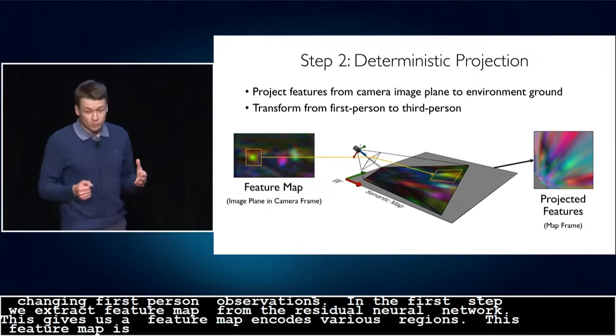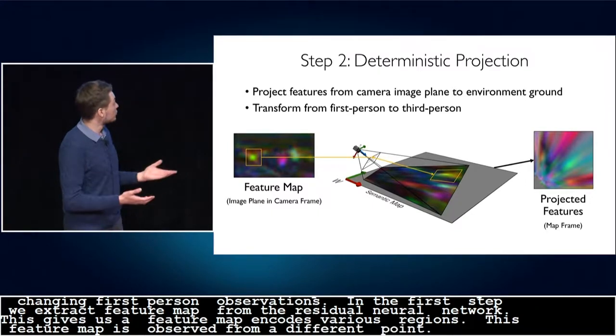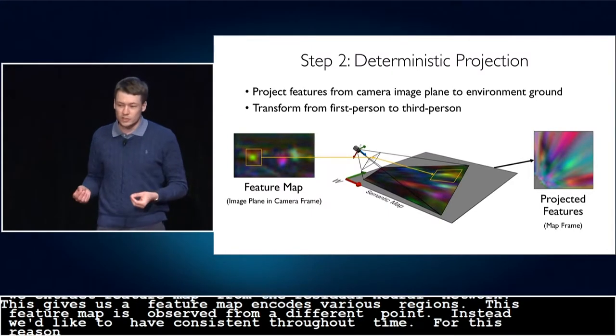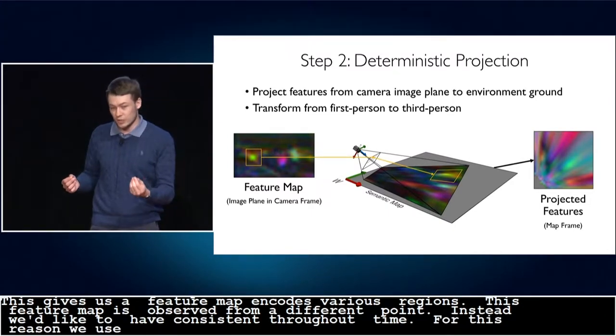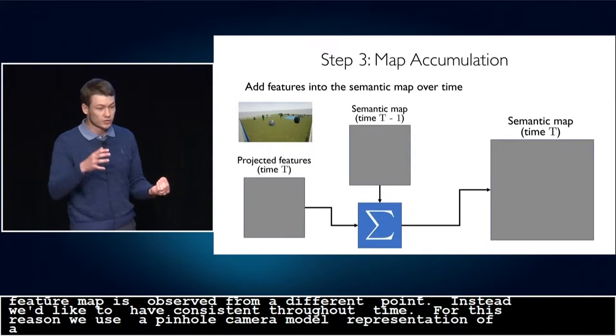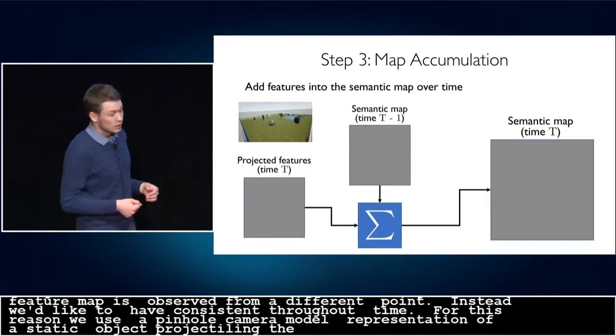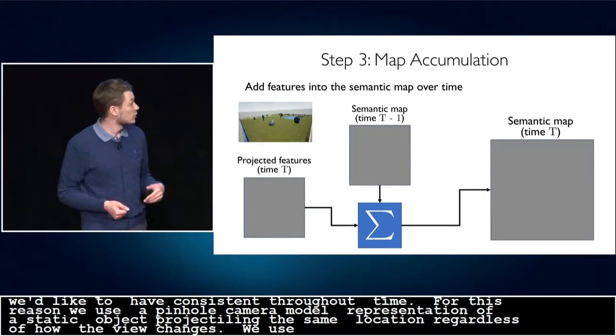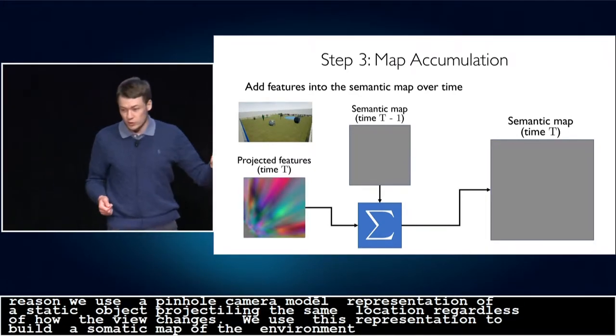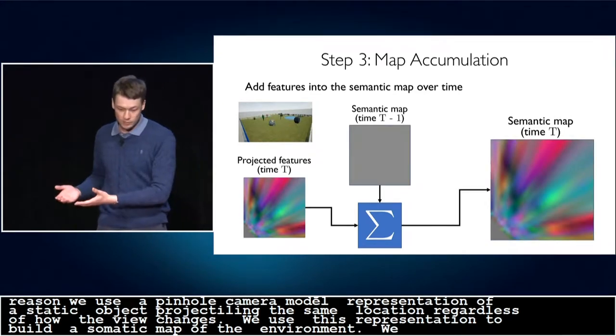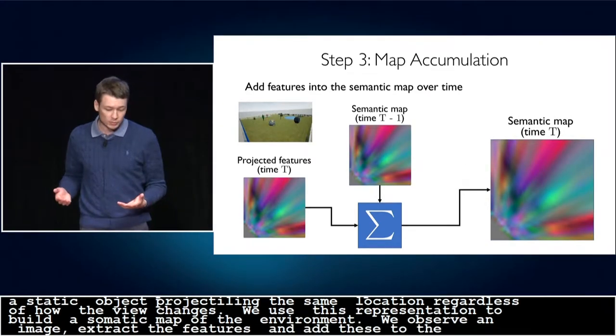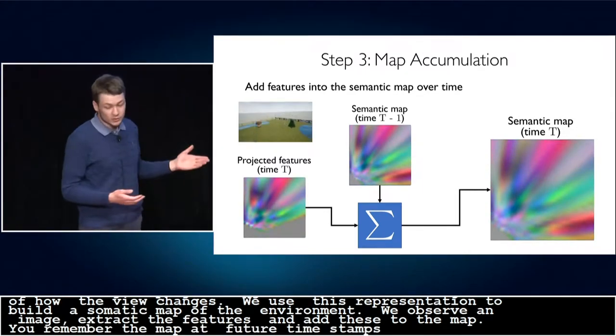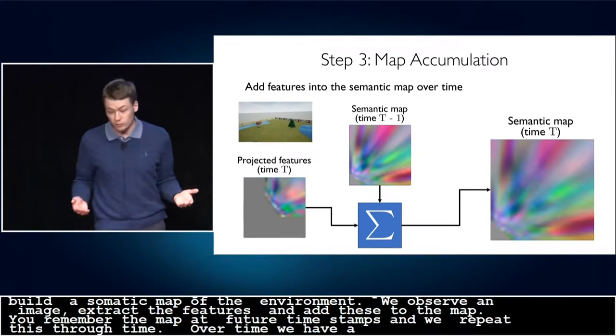Instead, we would like to have a representation that is consistent through time. For this reason, we project this map using a pinhole camera model such that representation of a static object is always projected to the same location regardless of how the direction of view changes. We use this representation to build a semantic map of the environment. The way this works is we observe an image, we extract the projected features, and we add these to the map. We remember the map for future time steps, and we repeat this through time. Over time, we obtain a more and more informative map that stores information about everything that we've seen so far.